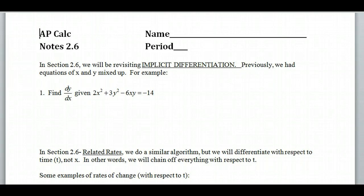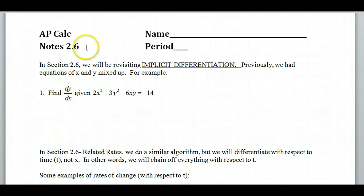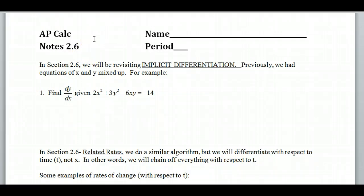This is AP Calculus notes section 2.6, called Related Rates. With related rates, what we have to do is implicit differentiation.